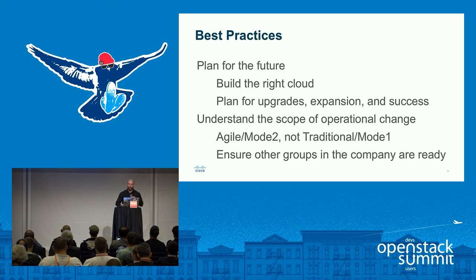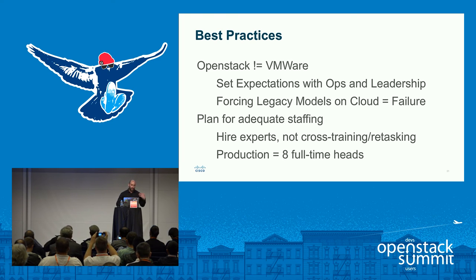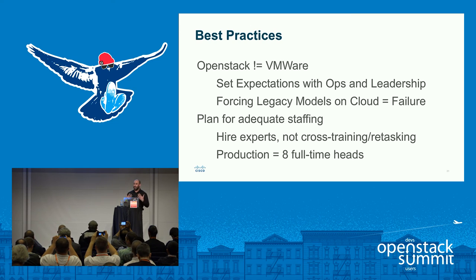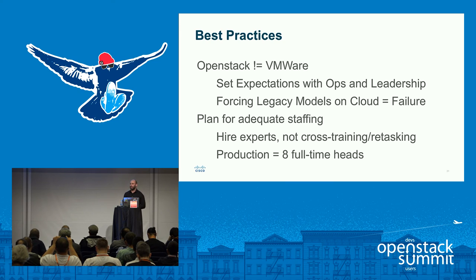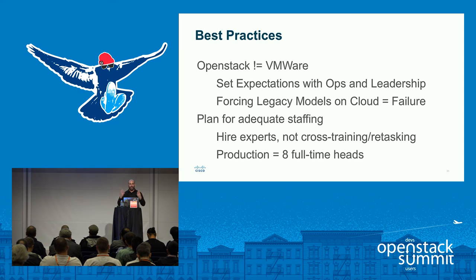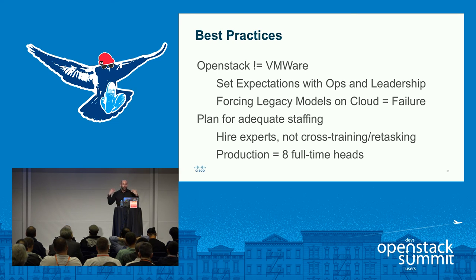Set expectations with ops and with leadership. Let operations people and devs know you won't have hardware-mediated HA — if a physical host goes down, all VMs on it go down, and any ephemeral storage data may be lost. You need to plan for that and build your application accordingly. Let leadership know this is not cheap VMware — this is a transformational project that will change the way your IT operations function for the better. Understand that trying to force legacy operational models onto your cloud means guaranteed failure.